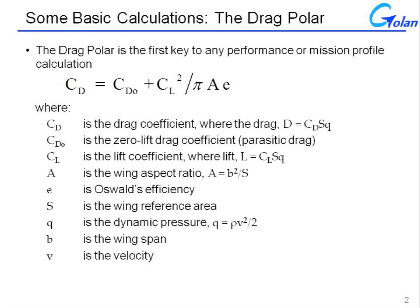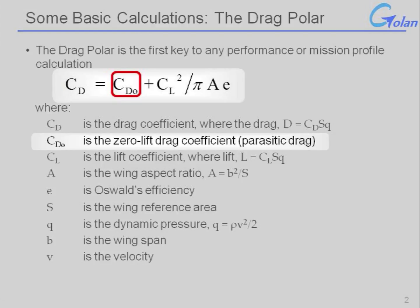The cornerstone of any performance or mission analysis calculation lies with the drag polar. Today we're going to be reviewing a classical drag polar. There are modified versions of it, but you get the central gist and the underlying mathematics from looking at either form. The drag polar can be broken down into a series of segments, beginning with the zero lift drag coefficient, or the parasitic drag, and the induced drag coefficient, or the drag due to lift.